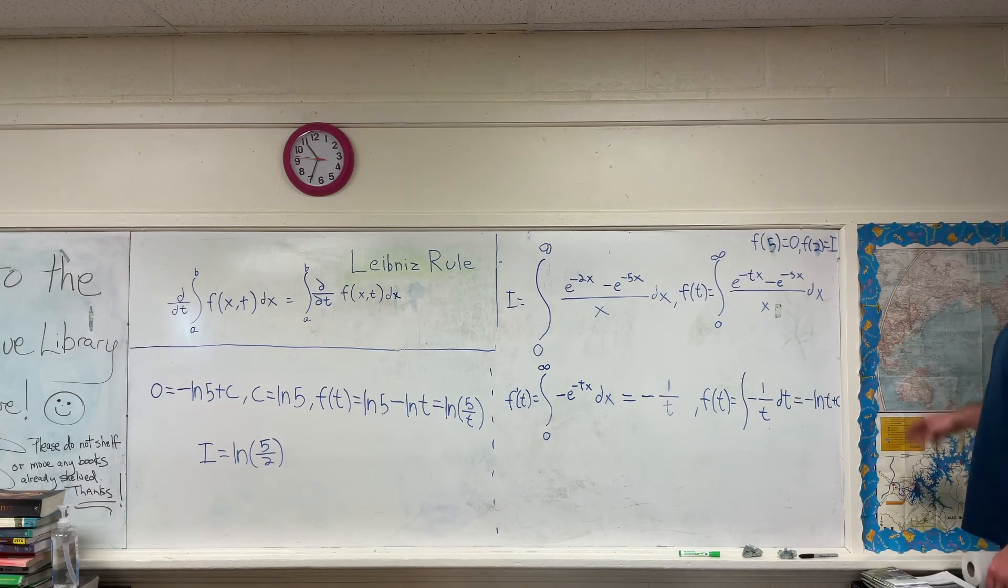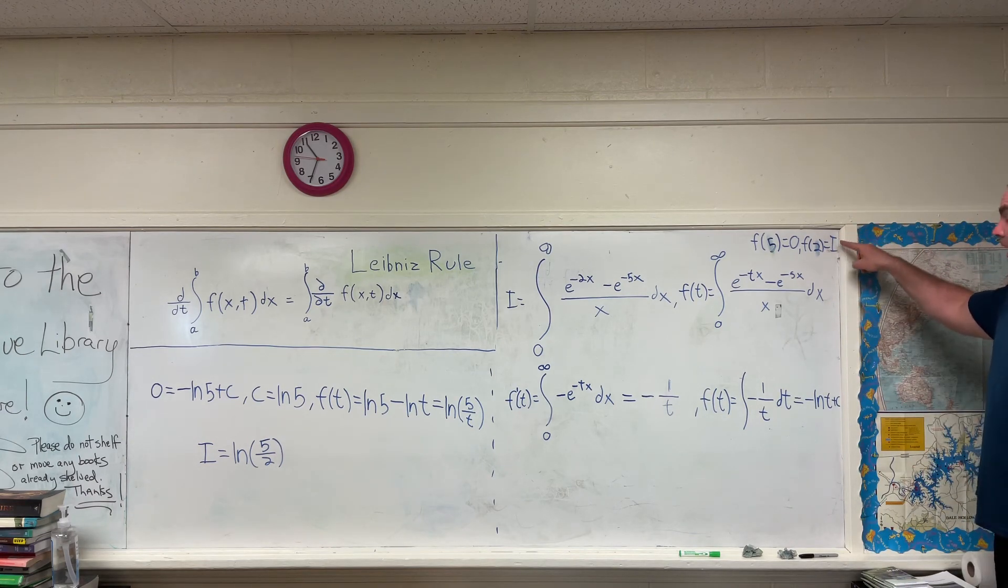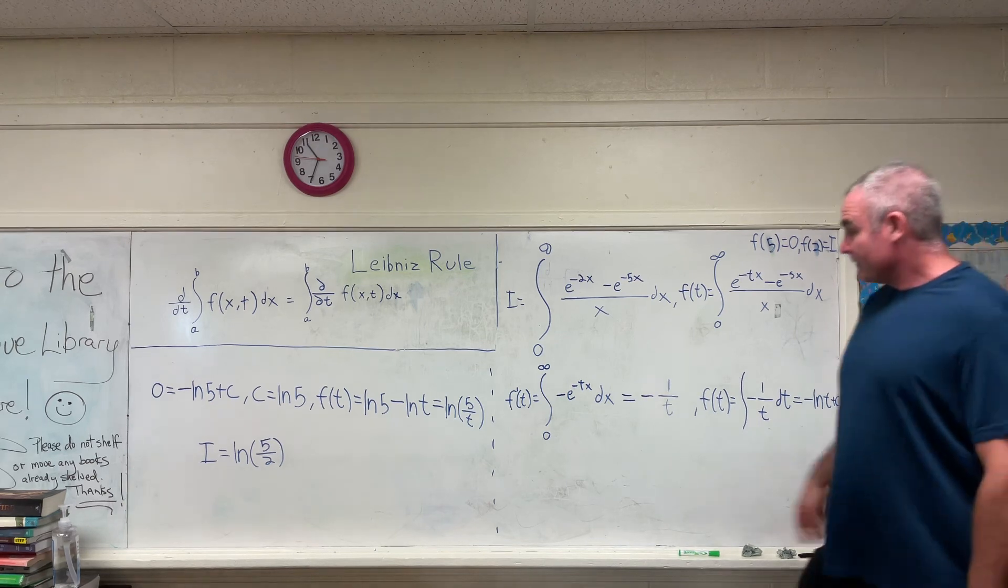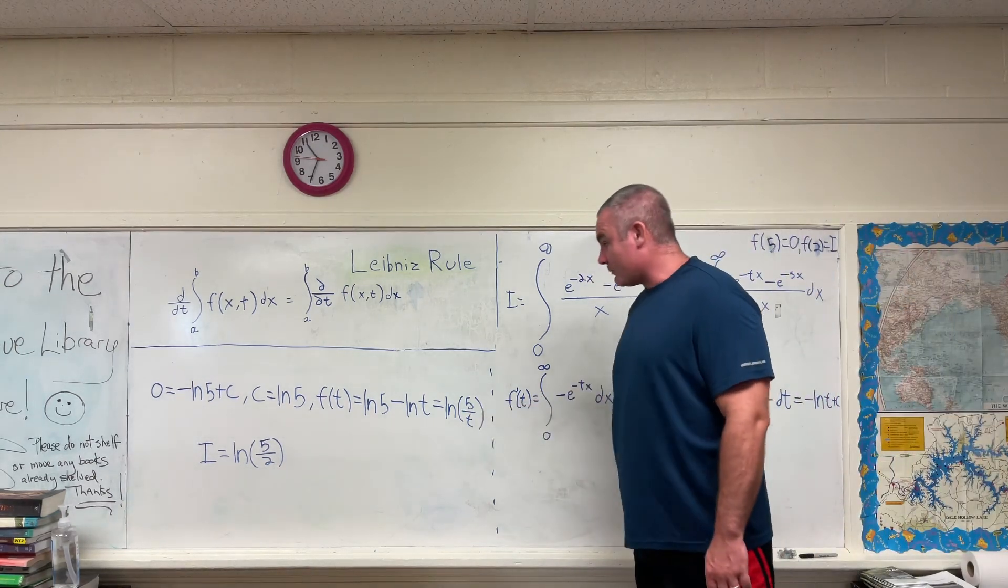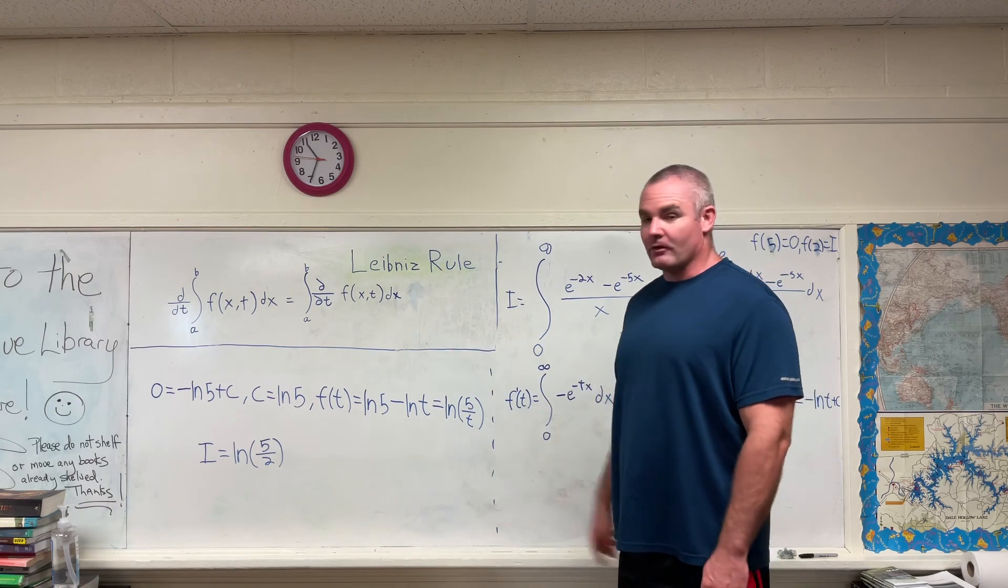Now, using the fact that f of 2 is equal to what we want, all we do is plug in 2 right there, and we have that our final answer is natural log 5 over 2.